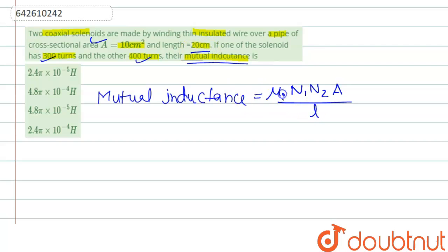It is materialized by mu naught which is a constant. So here in the question, N1 is given, N2 is given, area is given, and length is given. So if we substitute the values.